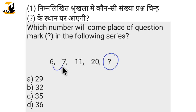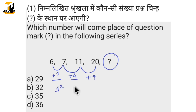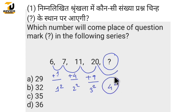The relation is: plus 1, plus 4, plus 9. The pattern is plus 1 squared, plus 2 squared, plus 3 squared, and the next is plus 4 squared, which equals 16.